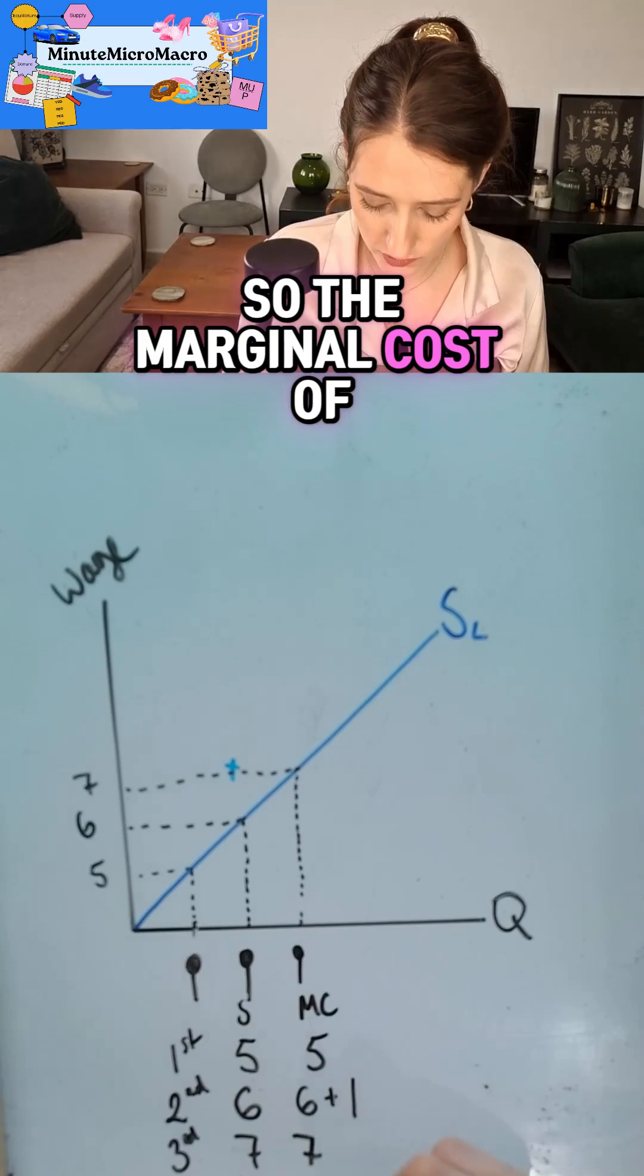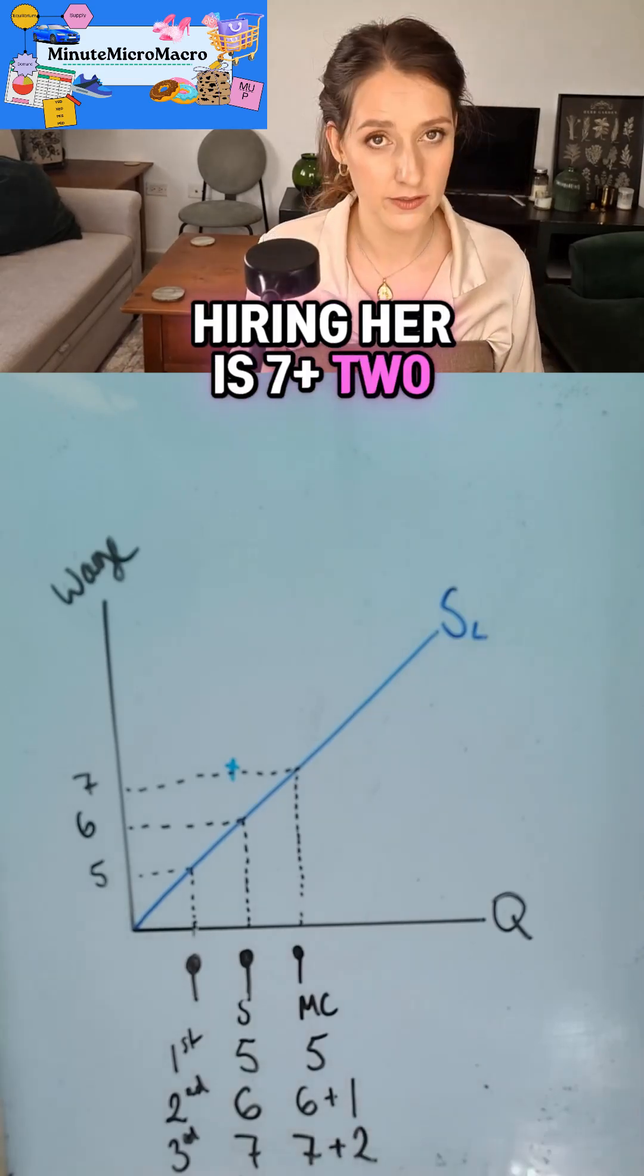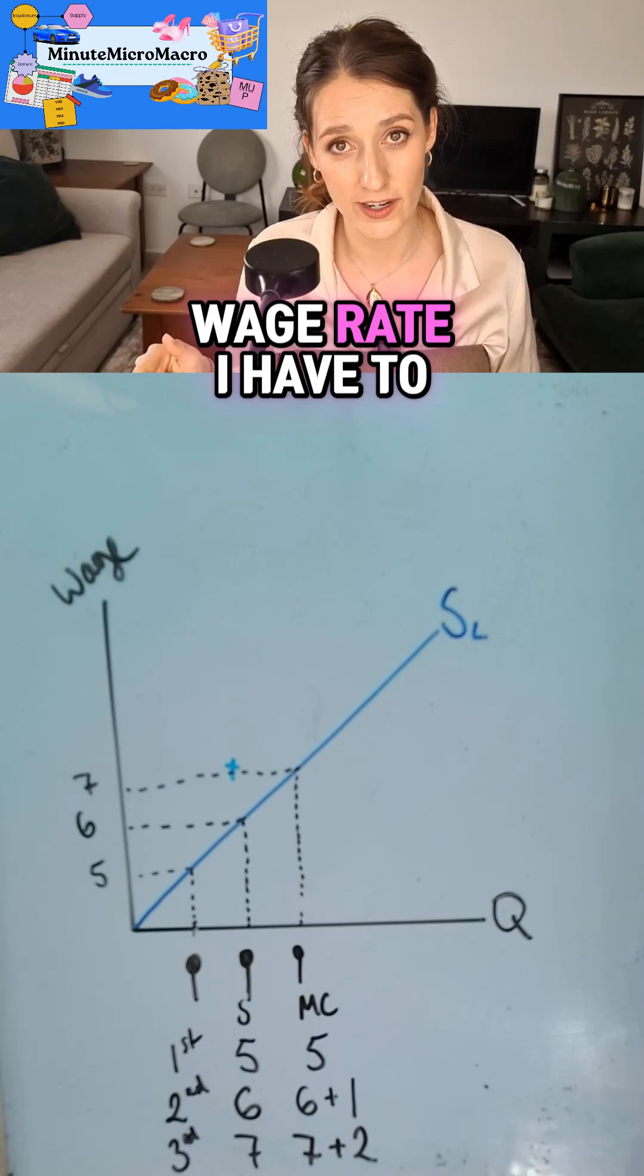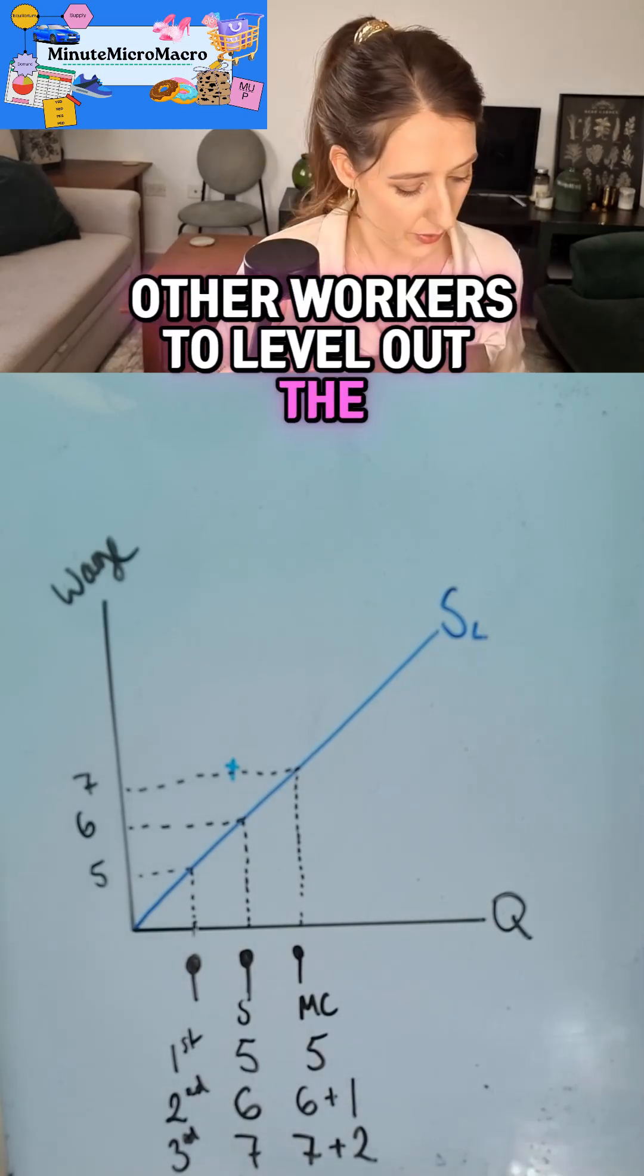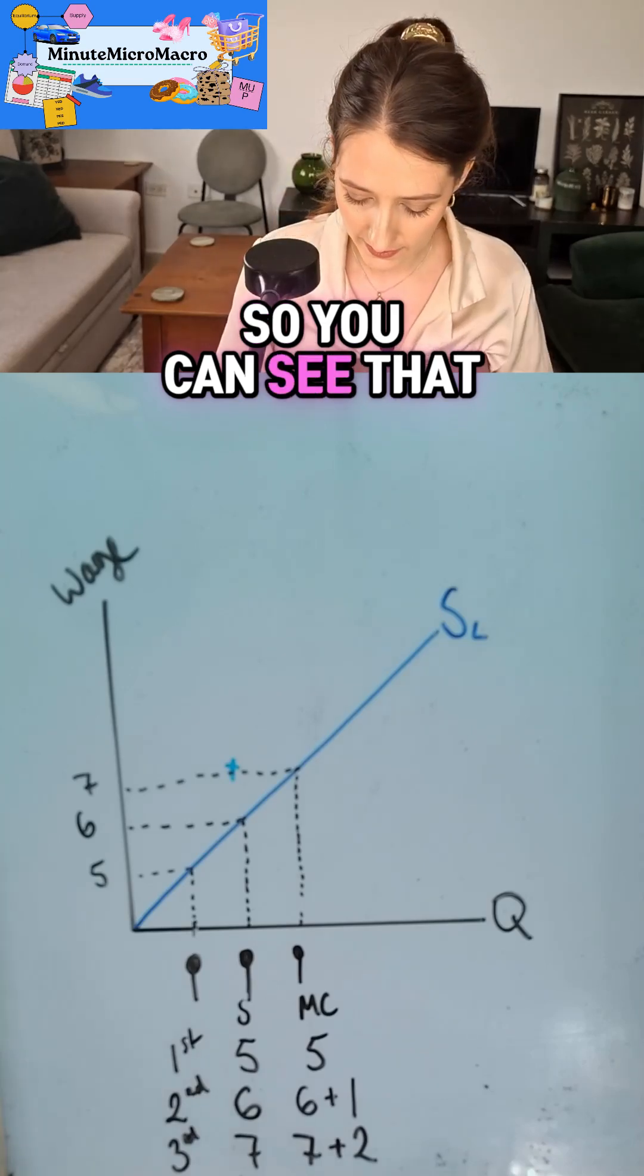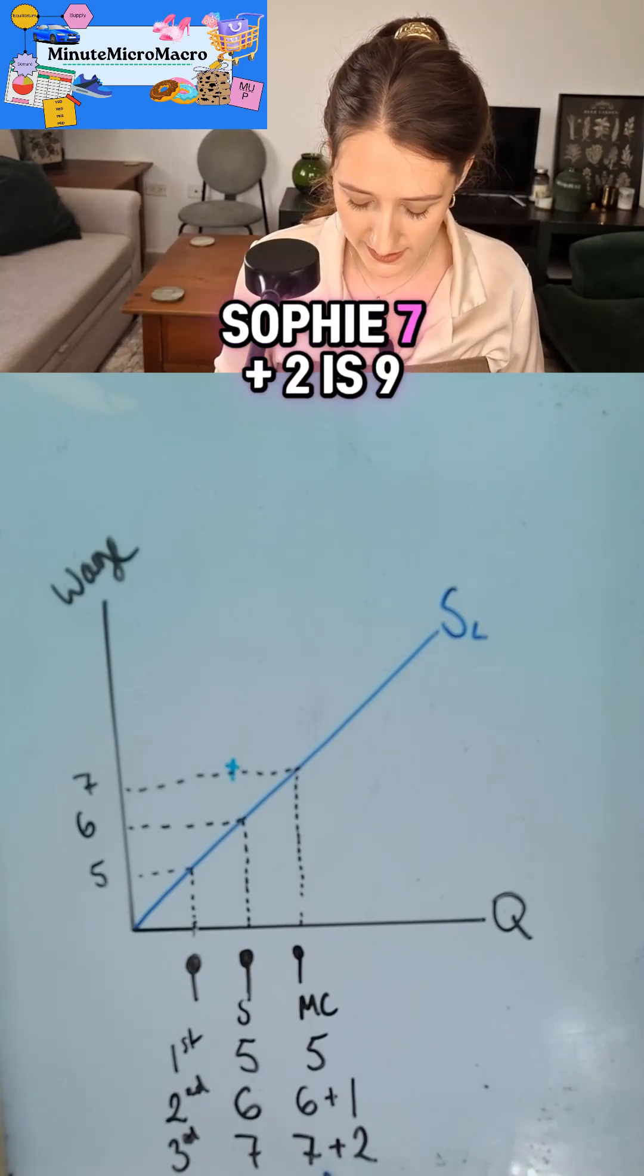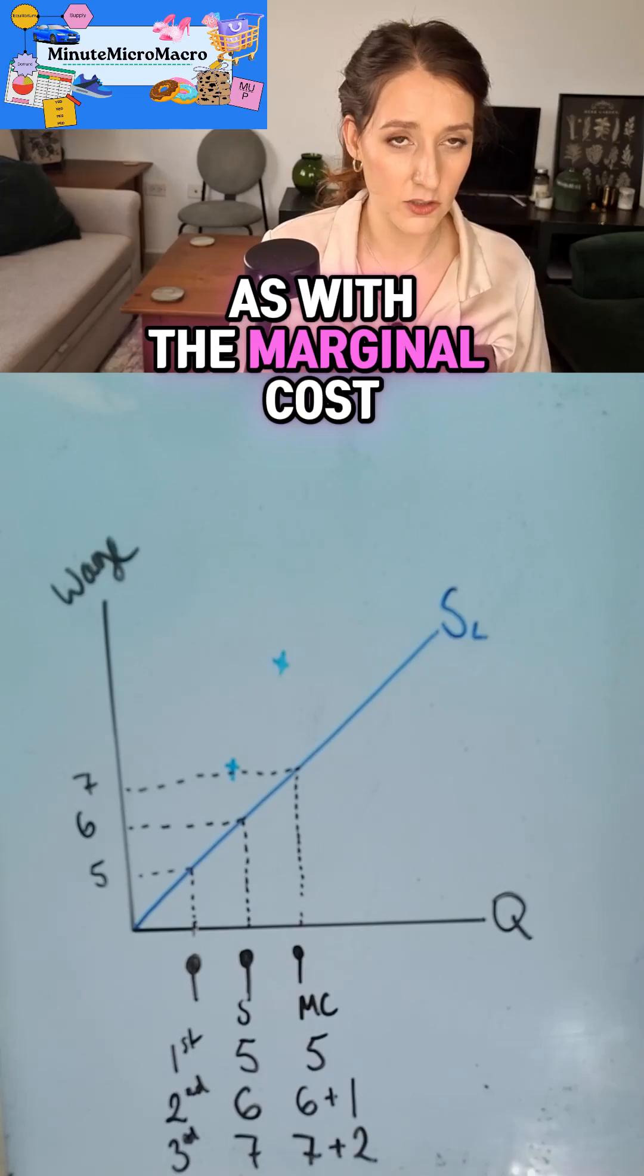So the marginal cost of hiring her is seven plus two. So each time I hire a new person at a higher wage rate, I have to go back and pay my other workers to level out the wage rate. You can see that the marginal cost of hiring Sophie, seven plus two is nine.